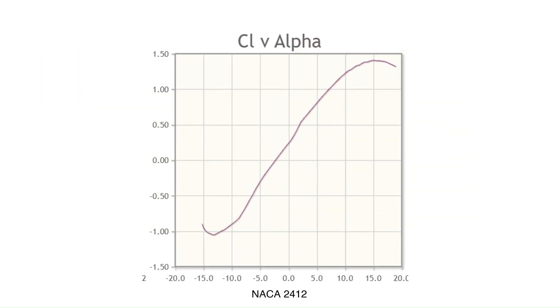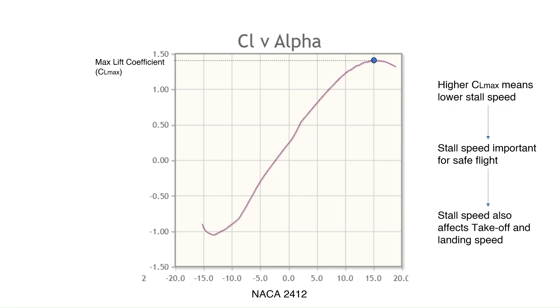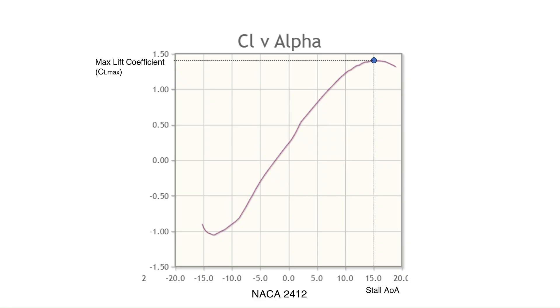Let's look at these plots more closely. This is a plot of the lift coefficient versus the angle of attack. We can easily see here the maximum lift coefficient the airfoil can generate. CL max is the lift coefficient at which the airfoil stalls. Higher the CL max of the airfoil, lower its stall speed. Stall speed is a very important metric for the safety of the aircraft and it also influences the takeoff and landing speed. Generally, we want a low enough stall speed value for shorter takeoff and landing and for safety reasons. The corresponding value of AOA at which we have CL max is simply the stall angle of attack.